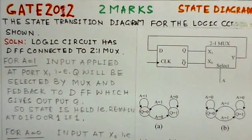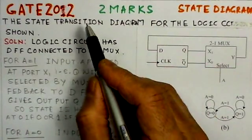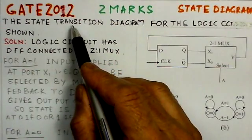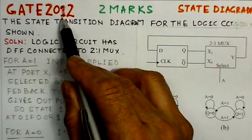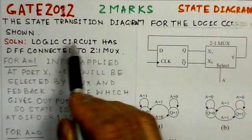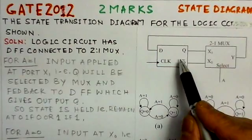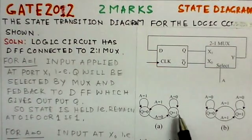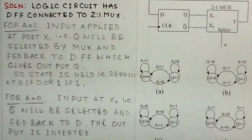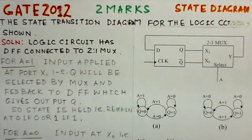This is problem four of the set, based on the state transition diagram. This is a GATE 2012 two-marks question. The state transition diagram for the logic circuit shown is to be identified. There are four state transition diagrams given, and we have to identify which is the correct state diagram for this circuit arrangement.